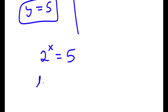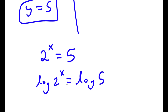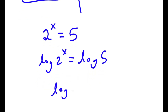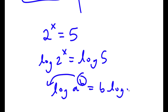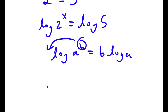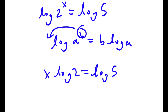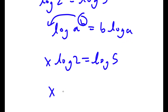Remember we let 2 to the power of x equal y, so this means 2 to the power of x equals 5. Taking the log on both sides: log of 2 to the power of x equals log 5. Using the log power rule, x times log 2 equals log 5, meaning x equals log 5 over log 2.